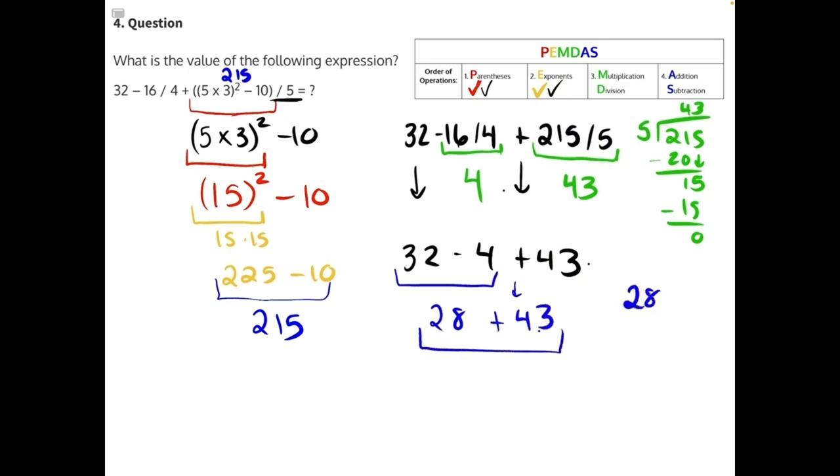28 plus 43, 11, 3 plus 4 is 7, 71 is our final answer.